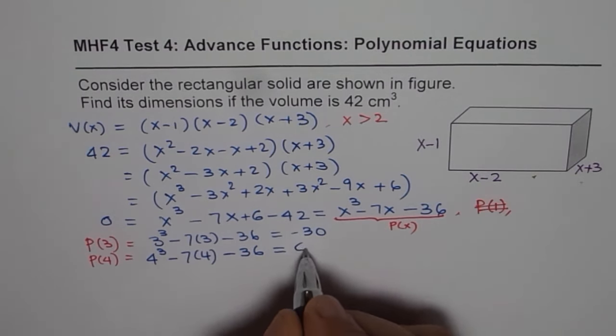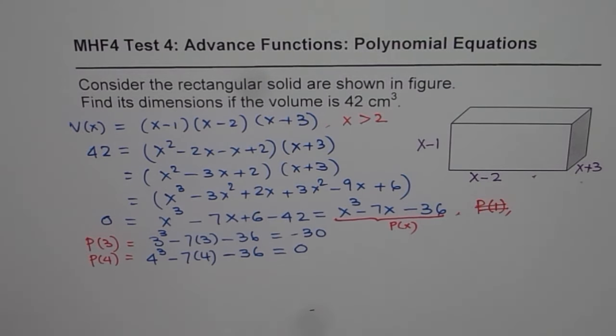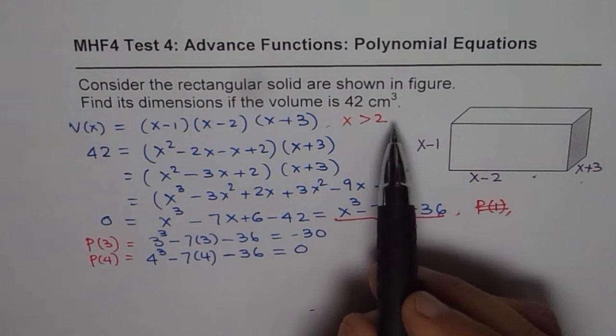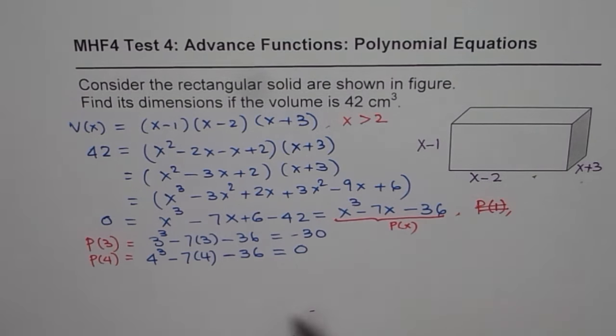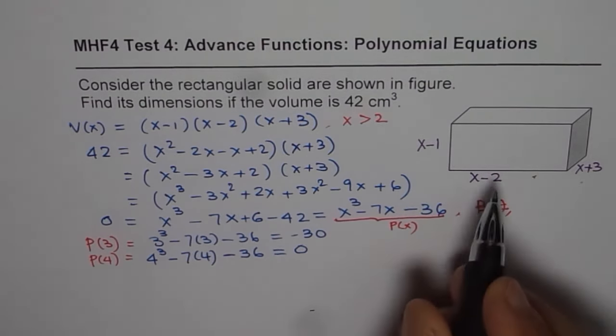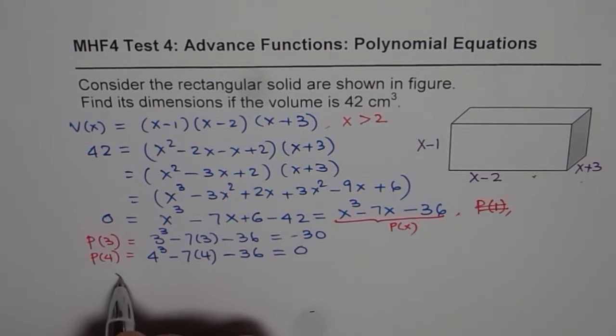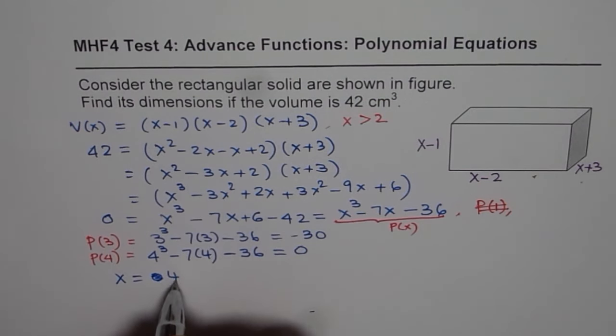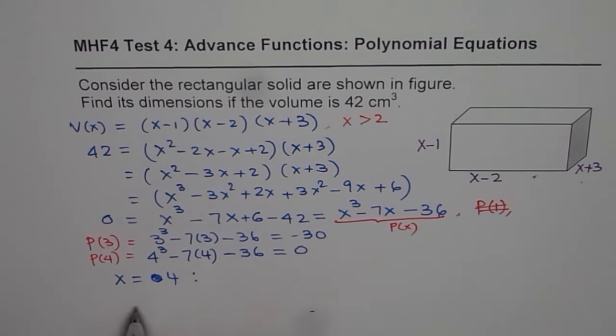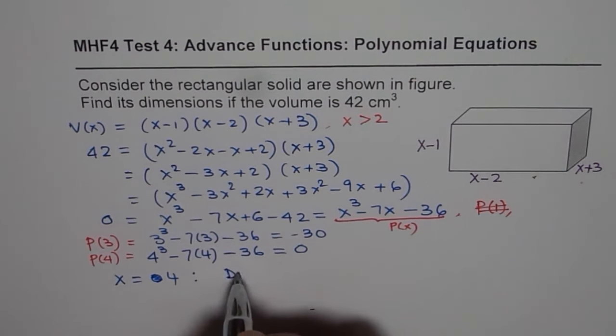So that means we got the first factor. Now since the question is not asking for all possible and things like that, we know at least one value is correct. So we know x equals to 4 leads to solution. x equals to 4 leads to the solution.